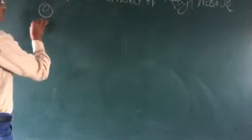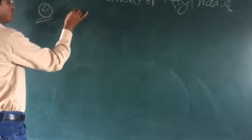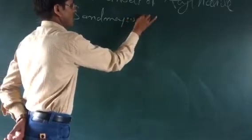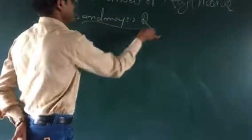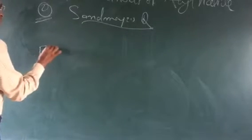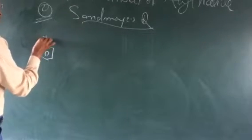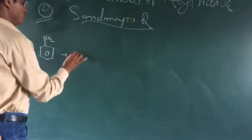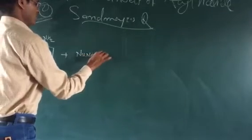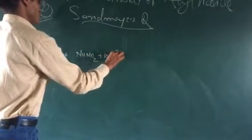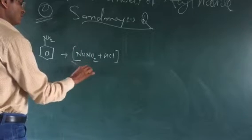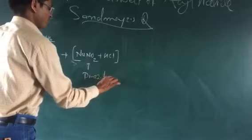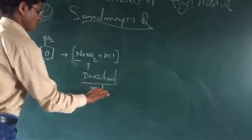The second type of preparation method uses one of the most important reactions — the Sandmeyer reaction. In the Sandmeyer reaction, aniline is reacted with HNO2, or you can take NaNO2 plus HCl, which forms a diazotized mixture.